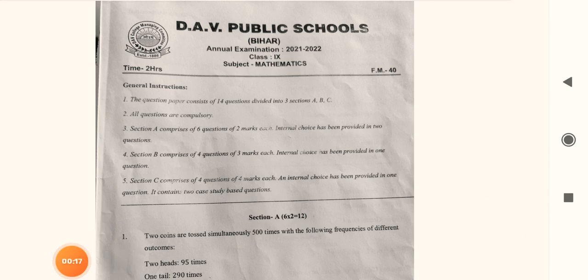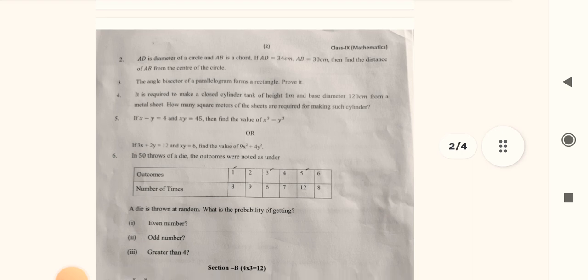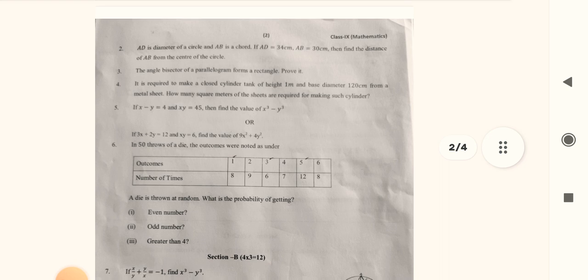Let's go down. The question paper starts from Section A — six questions of two marks. Here's question number one from the chapter Probability. Section A ends here. Read the questions very carefully; it is very important for next year's revision of maths.